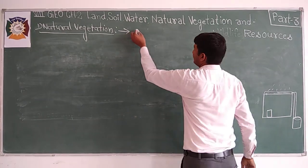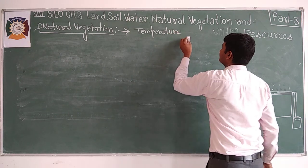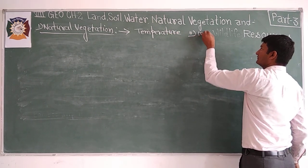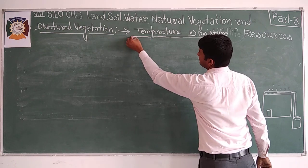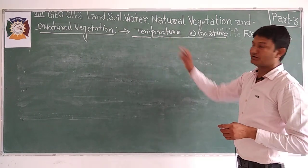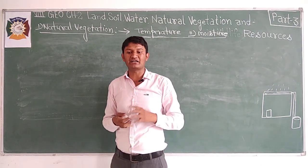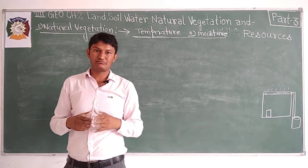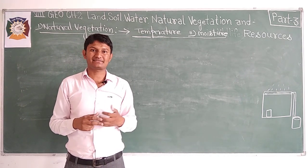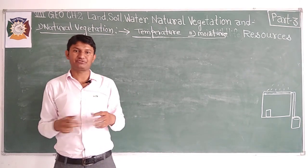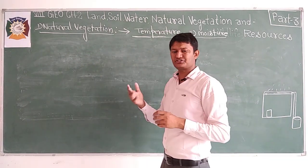The key factors that affect natural vegetation are temperature, moisture or rainfall, and soil availability. Natural vegetation is the wealth of our life — we get oxygen, fruits, lentils, honey, and many different things from it.